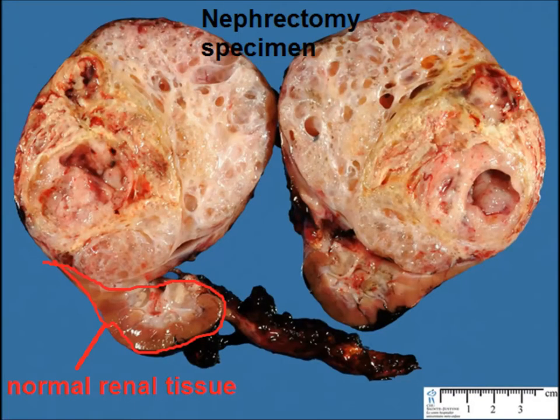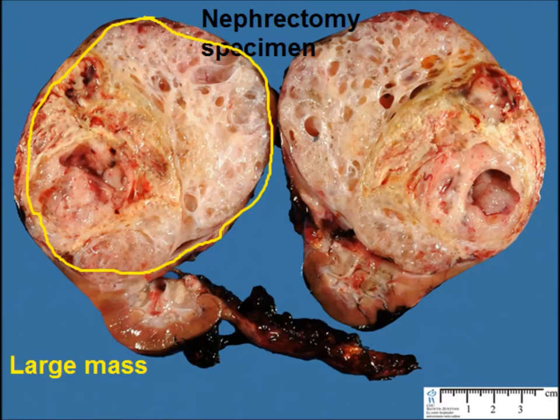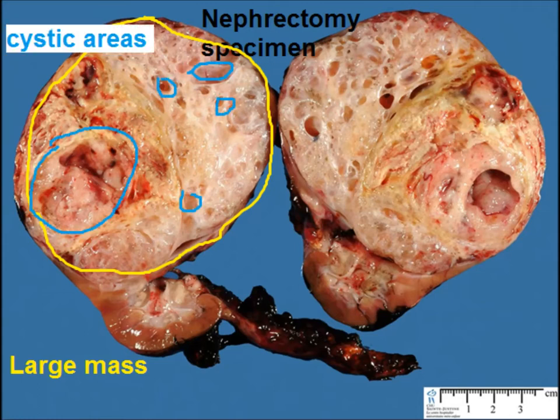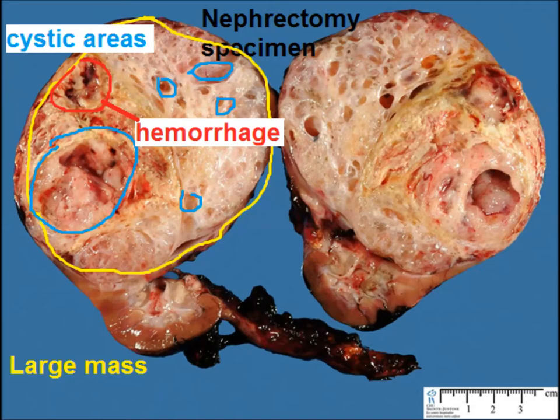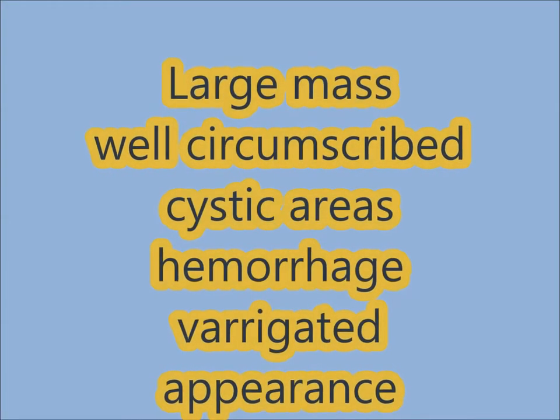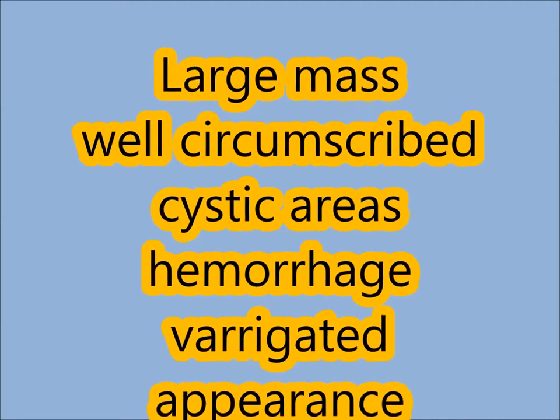There is normal renal tissue which you can appreciate at the lower end, and there is a large mass replacing the kidney. It is well circumscribed. There are cystic areas in the mass, and also areas of hemorrhage. Because it is a malignant tumor, the tissue may undergo necrosis. So we have: large mass, well circumscribed, cystic areas, and areas of hemorrhage.